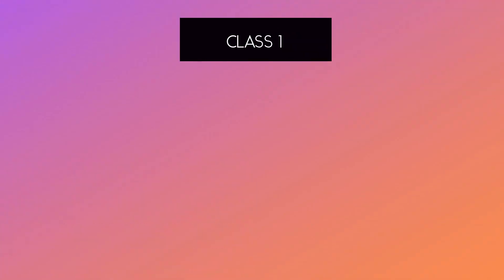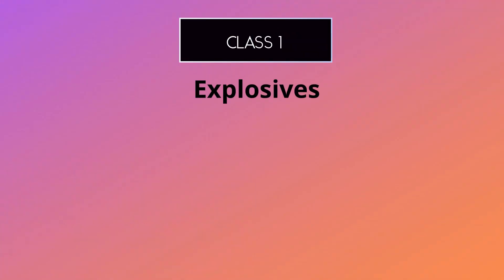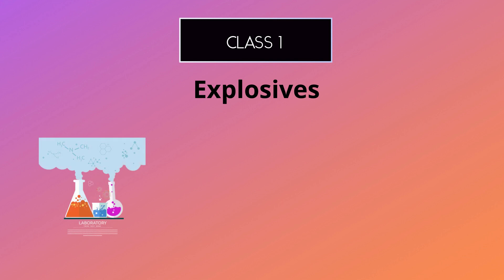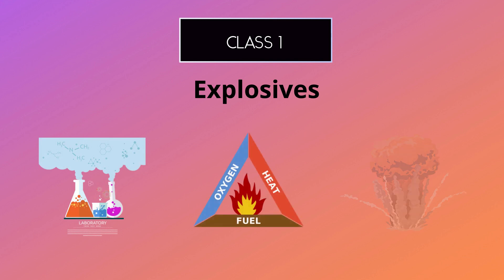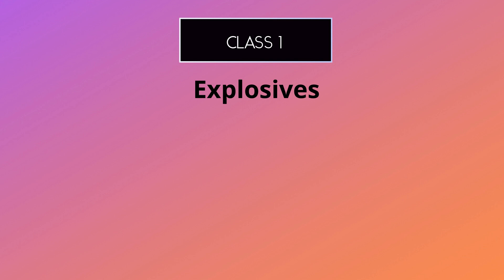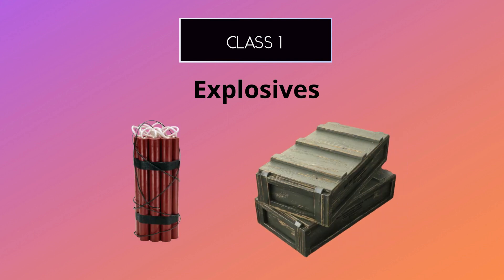The first class of dangerous goods is explosives. This includes anything that can produce a chemical reaction, combustion, or detonation — such as fireworks, dynamite, and certain types of ammunition.